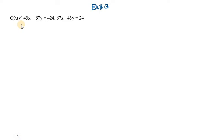Now you need to use one trick here. You need to mark this as equation 1 and the second as equation 2. First you need to add these equations, then you need to subtract them, and from there you can get the value of x and y.